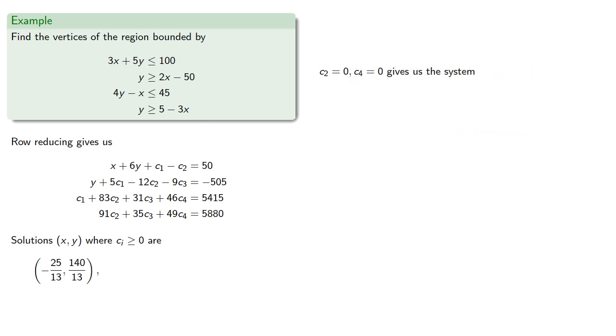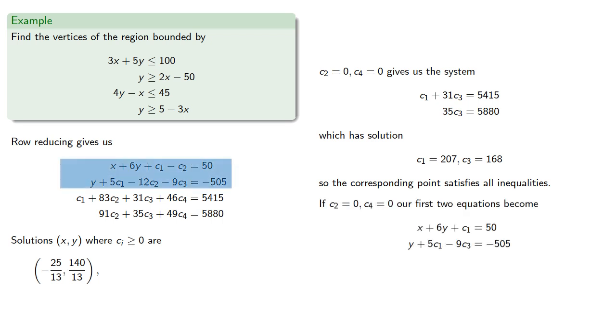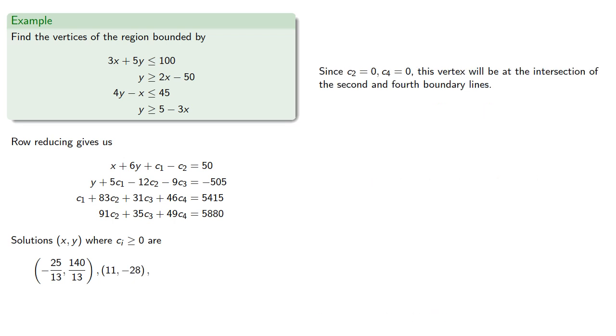Next, we can let c2 and c4 be 0. This gives us a system which has solution... So the corresponding point satisfies all the inequalities. If c2 and c4 are both 0, our first two equations become... Substituting in our values for c1 and c3 and solving gives us another vertex. And again, since this is the vertex corresponding to where c2 and c4 are both 0, this vertex will be at the intersection of the second and fourth boundary lines.